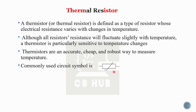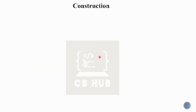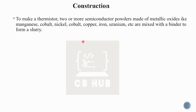In the construction of a thermistor, two or more semiconductor powders made of metallic oxides — like manganese, cobalt, nickel, copper, and iron — are used. These metallic oxide powders are mixed with a binder to form a slurry.